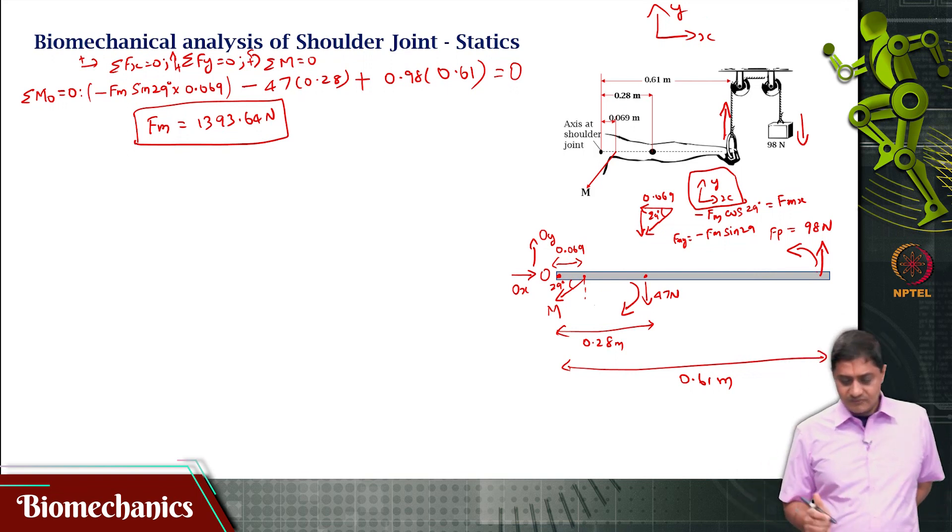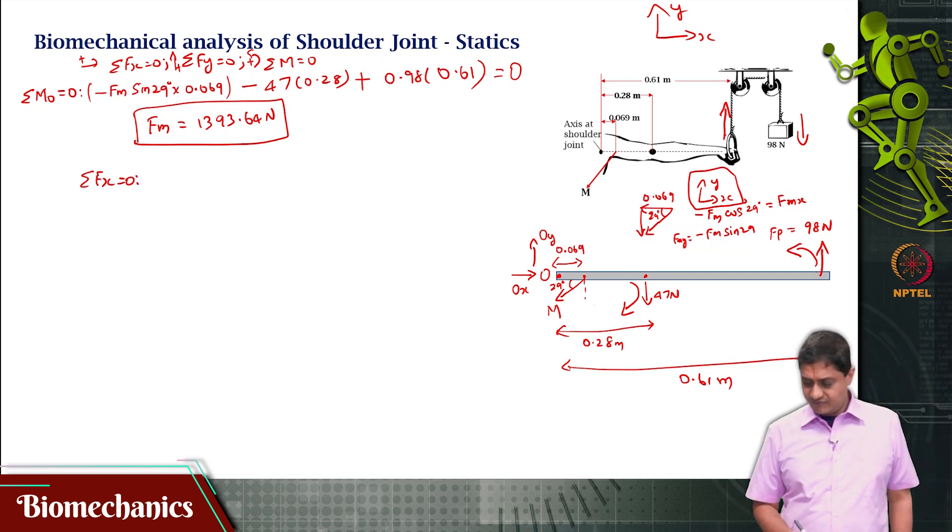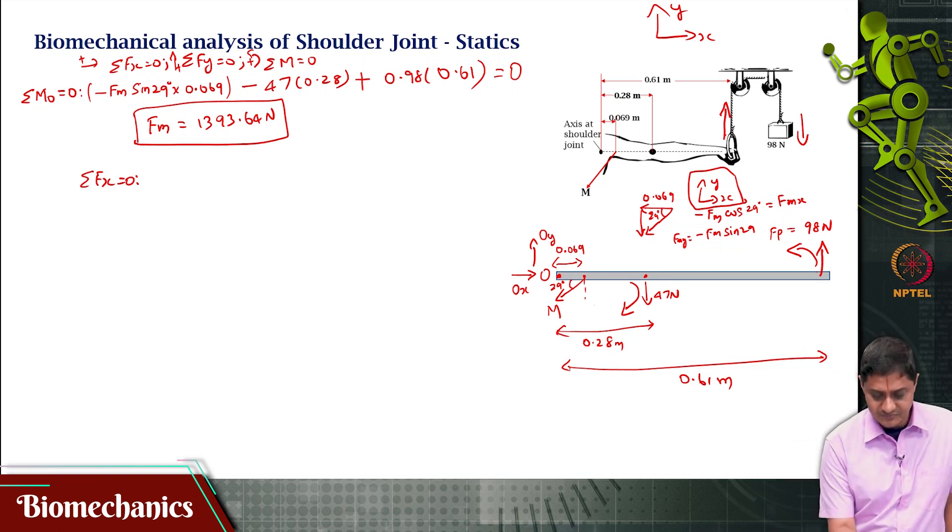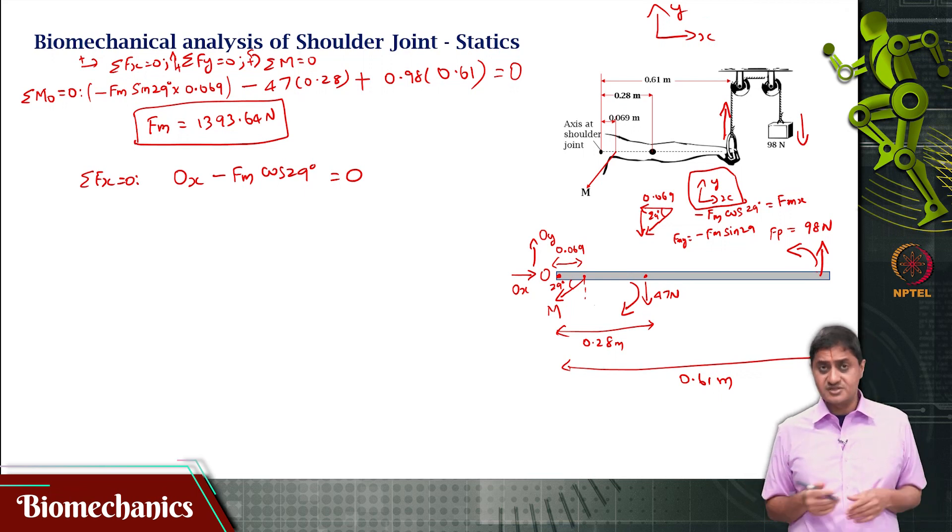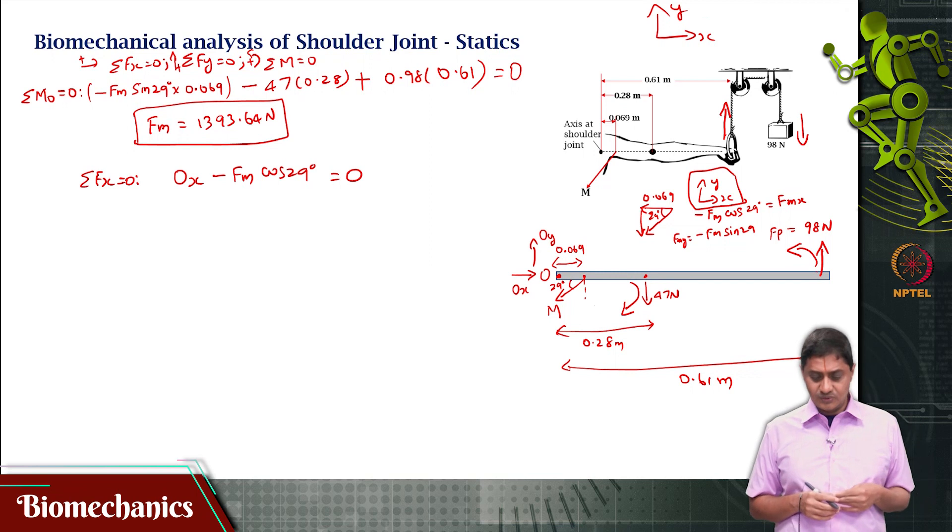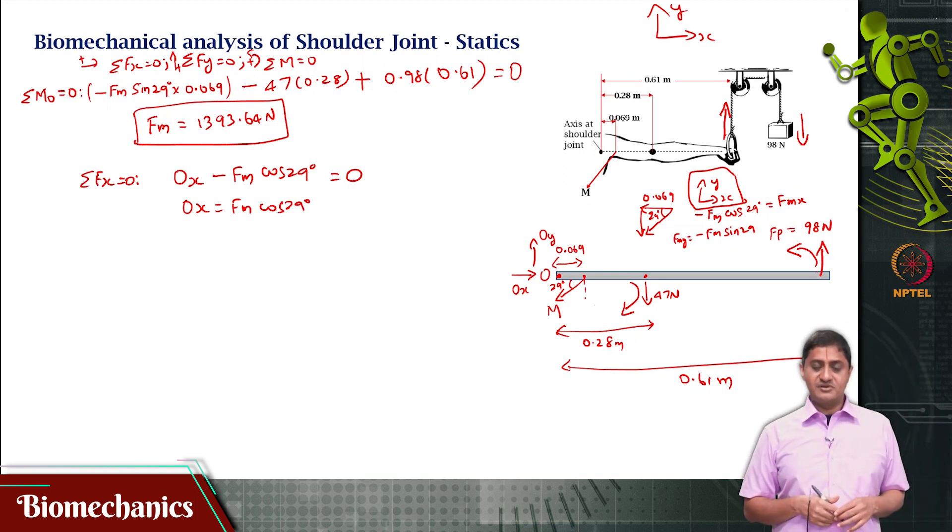Now, we still have to solve for sigma FX equal to 0, if we have to find OX. You find immediately OX minus Fm cos 29 is 0. This is the sigma FX equal to 0, there is no other force in the X direction. Just the X component of Fm and OX, these are the only 2.